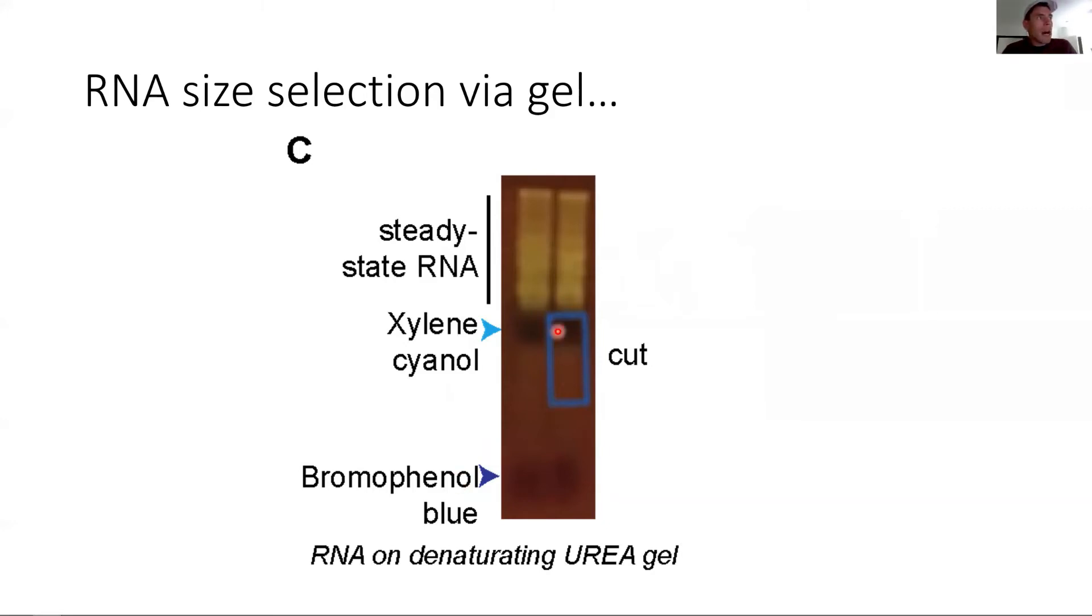Then we basically cut under the first line that we see, so we cut where we don't see any RNA. If you think it's fun, you can always stain this gel with a more sensitive dye like SYBR Gold, and then you will see there is a little bit of smear coming up. But the problem is it will be harder to see this clear distinction between steady state RNA and what is smaller than steady state RNA.